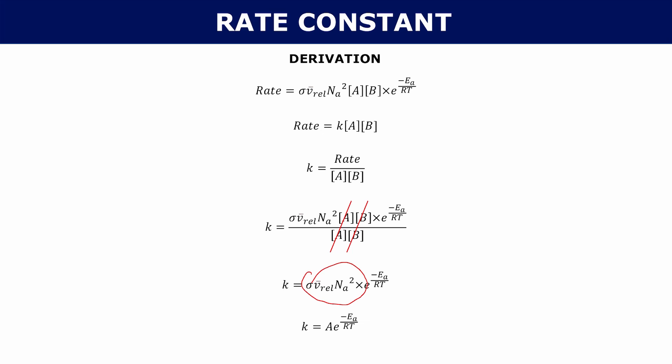The terms Ea and A are known as Arrhenius pre-factors because temperature doesn't really change their values. Your activation energy is not going to change depending on temperature — it's a property of the reaction itself.